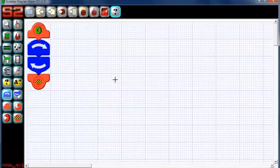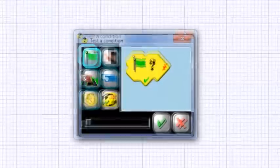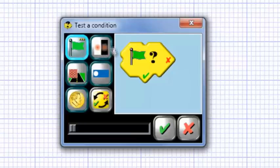Then we're going to need to monitor the states of the line follower sensors, and we do this by inserting a test condition tile. This tile allows you to check the states of each of the S2 robot's sensors and complete an action if that state is true or false. In our case, this button right here is for the line sensors.